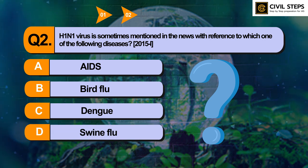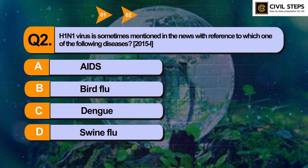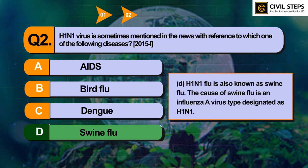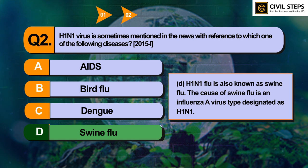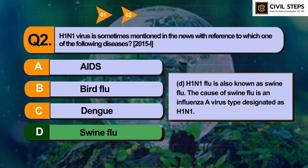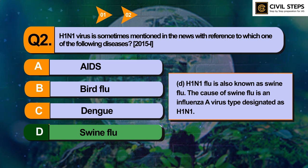You can pause this video and write your answer in the comment section below. The answer of this question is option number D — Swine flu. H1N1 flu is also known as Swine flu. The cause of Swine flu is an influenza A virus type designated as H1N1. You should know all types of viruses — what are RNA viruses, what are DNA viruses, the genetic makeup of viruses, the structure of viruses, and what is H1N1 virus, what is H5N1 virus. Different kinds of viruses are in the news nowadays.